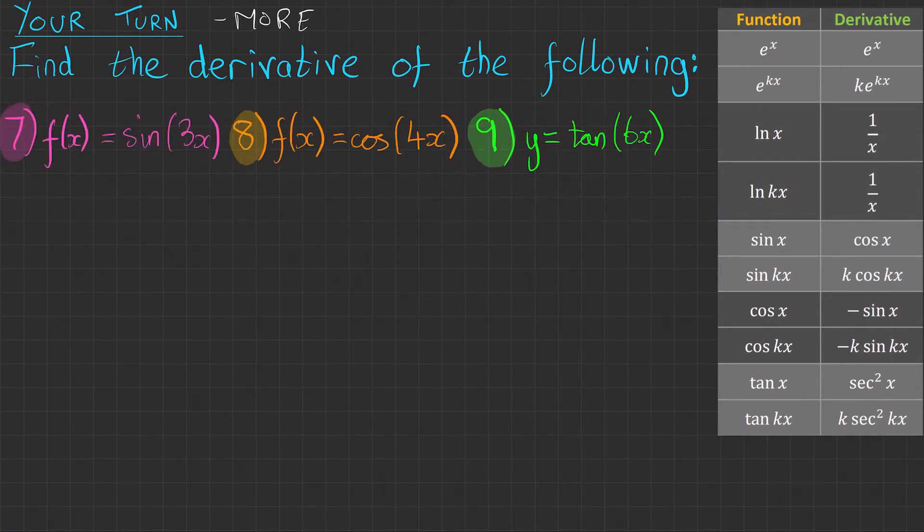Third set of questions now. Again, a little bit trickier. Question seven, f of x is sin 3x. So f dash x equals, we're looking down the table. We've got the sin x function,